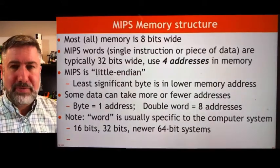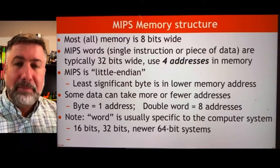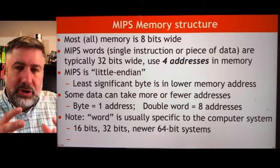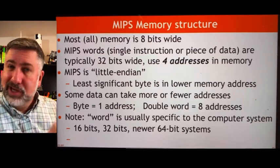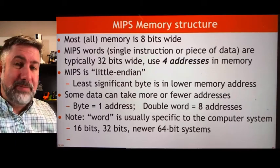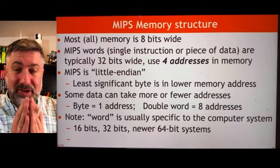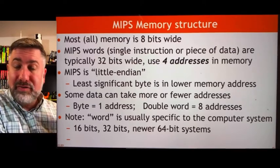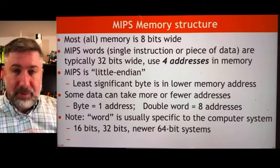The memory structure for MIPS — which you'll see as we start loading and storing information from memory — describes the structure and content of data memory that the ALU addresses to get information back and forth into the registers. Most memory is eight bits wide, and MIPS is no exception. The memory elements themselves are eight bits wide, which means if I want to load a 32-bit number from memory into a register, that's actually four separate operations.